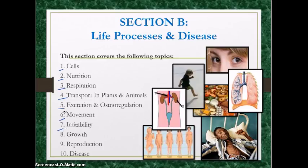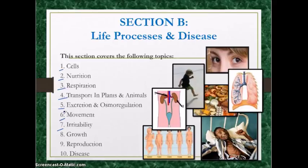Irritability covers the nervous system, the structure and functions of neurons, reflex pathways including cranial and spinal reflexes, the structure of the brain, and the structure and function of the eye — including parts, functions, and the process of accommodation, where the lens adjusts its shape to accommodate light from objects at different distances. Know your skin, and drug abuse is also a topic — specifically the effects of drugs on the brain.